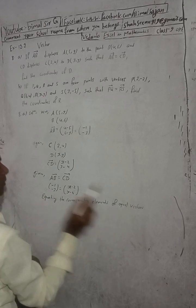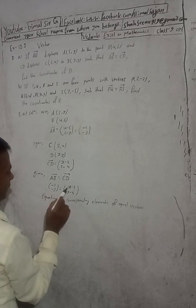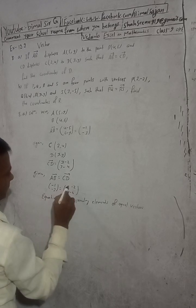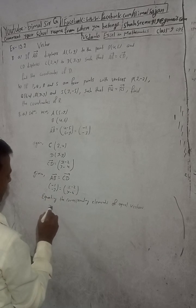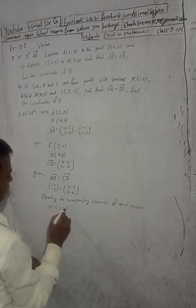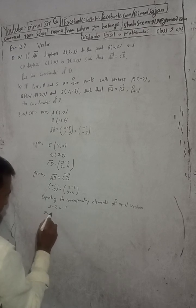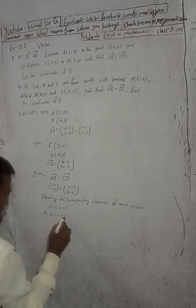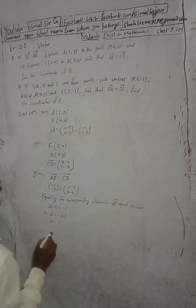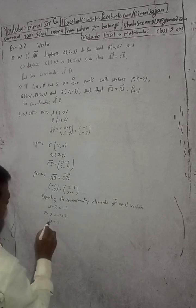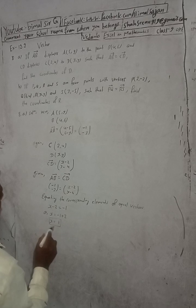So x minus 2 equals minus 1. When you solve this: x equals minus 1 plus 2, therefore x equals plus 1. We got the x value here.